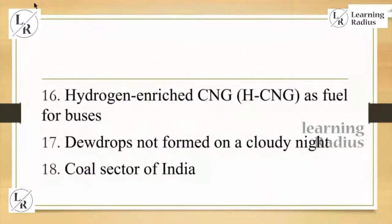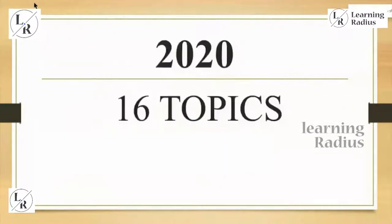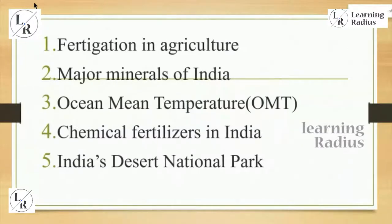It was 10 topics in 2018; now coming back to 2020 with 16 topics — this can be called current geography. You can relate some topics with environment ecology. My job is not labeling them as ecology, environment, or geography, but giving a correct relation for why they framed the question and from which route it came. Fertigation in agriculture is a current affair; ocean mean temperature is clear physical geography; chemical fertilizers in India is current affair; India's desert national park is current affair. Out of the first five topics, three are current affairs, one is static, one is physical geography.